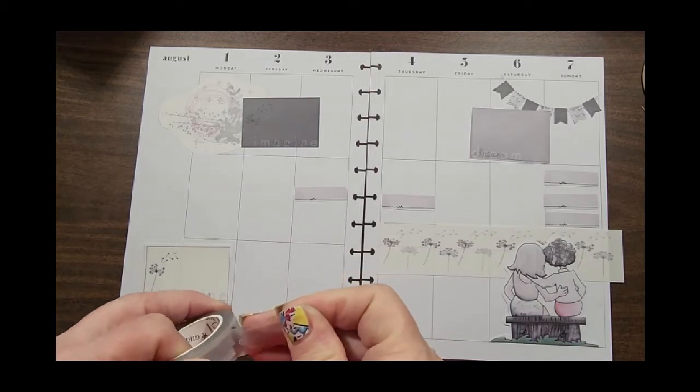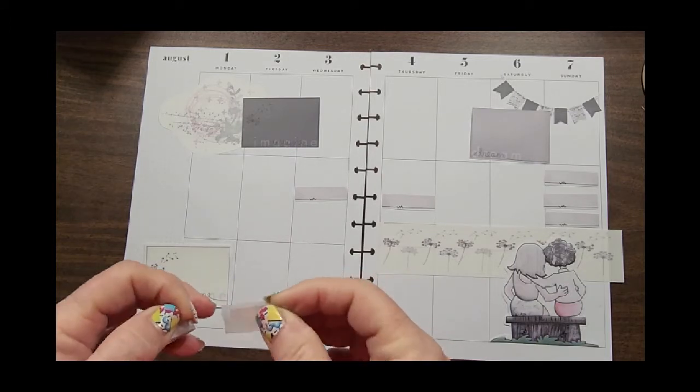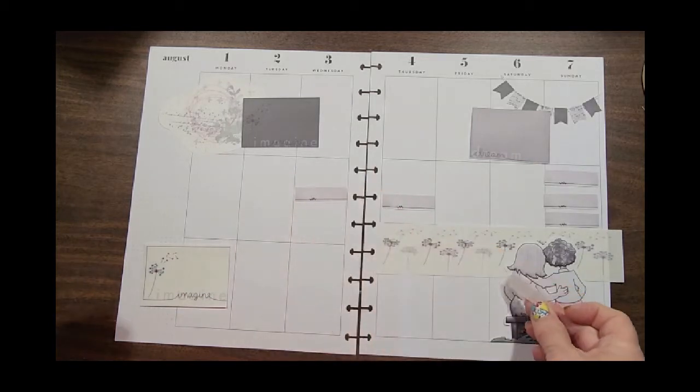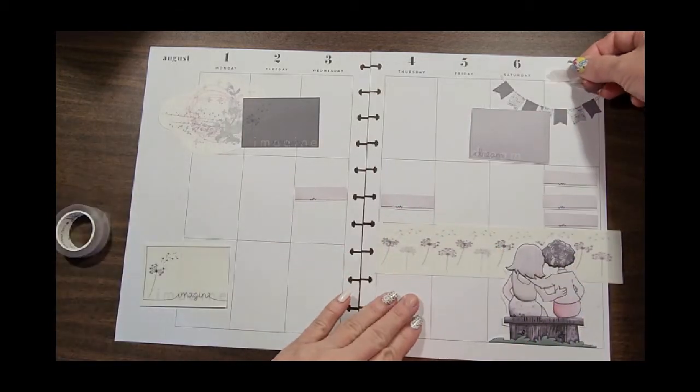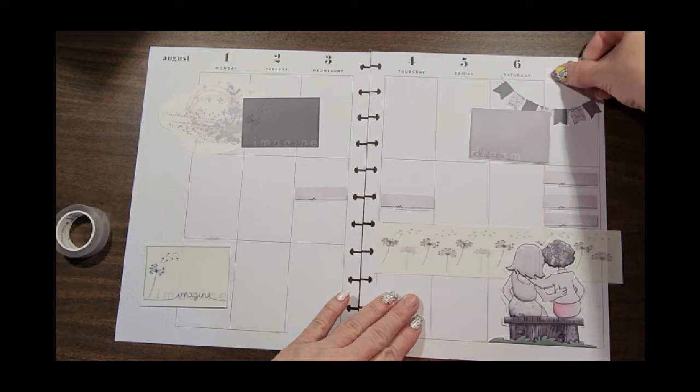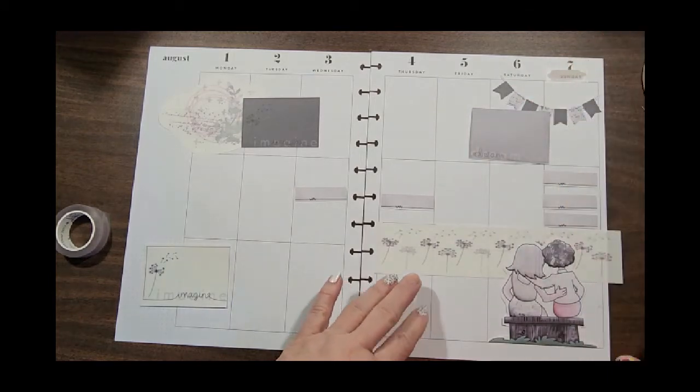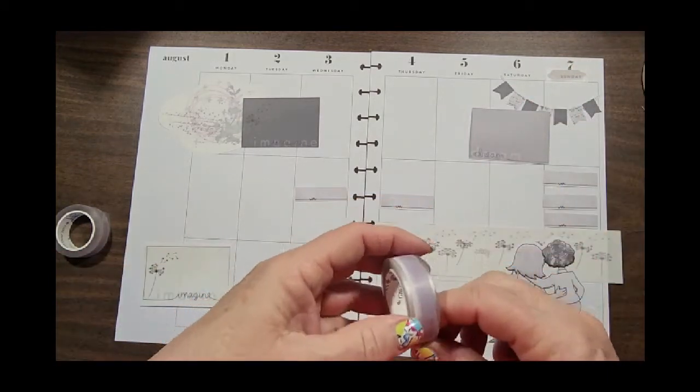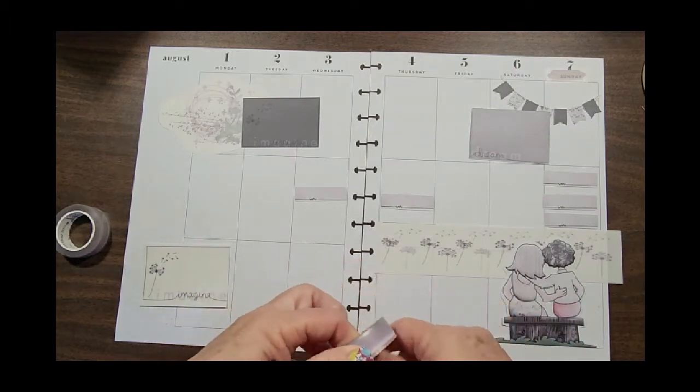Even though in my All About Me planner I have one goal every day, I don't know, this might not work. Might be the wrong color. Let's just see. Try this other one. This one's kind of a purpley color, but it's kind of purpley-mauvey mixed in.